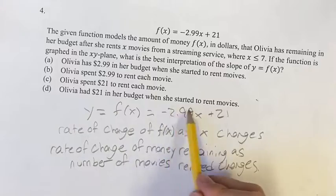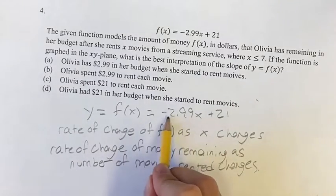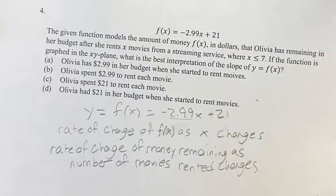So basically what this number is saying is the amount of money she has left goes down by $2.99 every time she rents a movie.